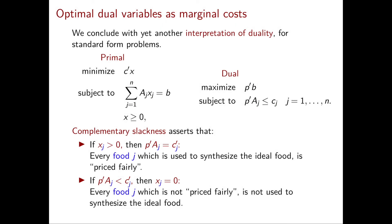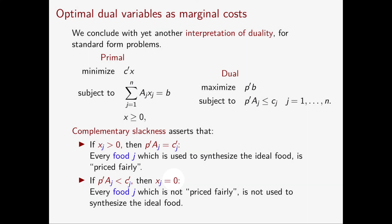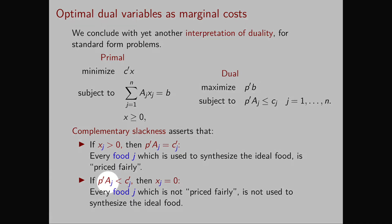On the other hand, we know that if P transpose Aj is strictly smaller than Cj, then Xj is equal to zero. This means that if the fair price of the food J is strictly smaller than its actual cost, then we're not going to use that food to synthesize our ideal food.